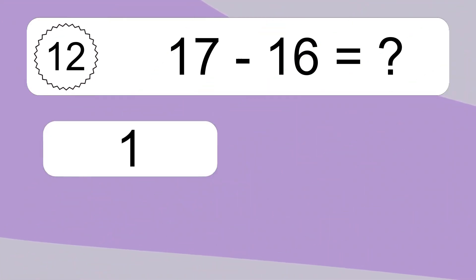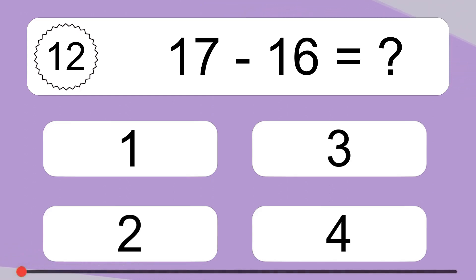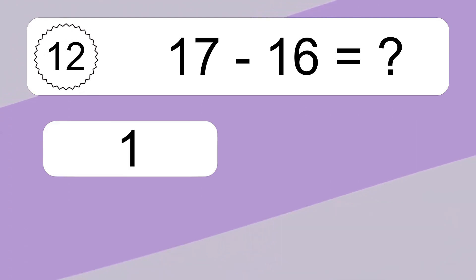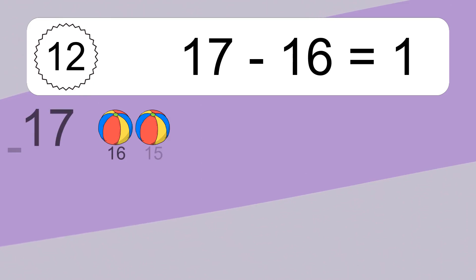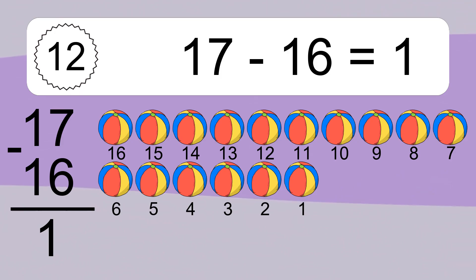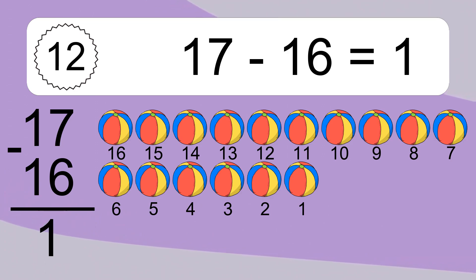17 minus 16 equals what? 17 minus 16 equals 1. Let's count it. 16, 15, 14, 13, 12, 11, 10, 9, 8, 7, 6, 5, 4, 3, 2, 1.